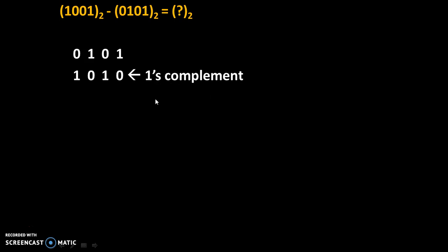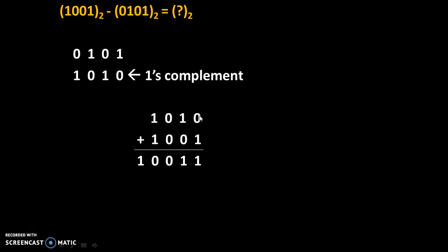According to Rule 2, we will add the one's complement of the second number to the first number. One's complement of the second number plus the first number 1001: 0 plus 1 is 1, 1 plus 0 is 1, 0 plus 0 is 0, 1 plus 1 is 0 with carry 1. So in this problem, carry is generated.